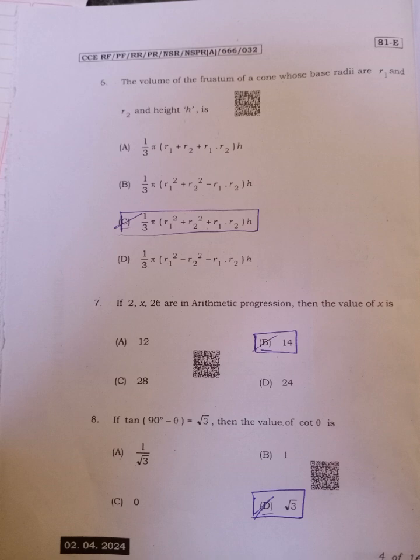Eighth, if tan 90 minus theta equals root 3, then the value of cos theta, the answer option D, root 3.